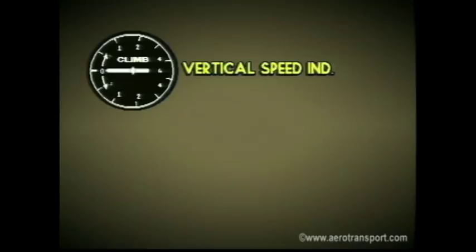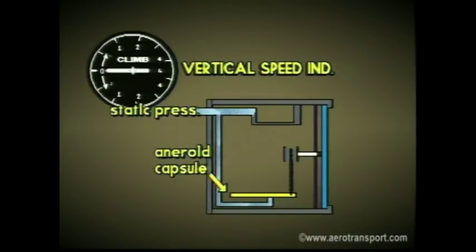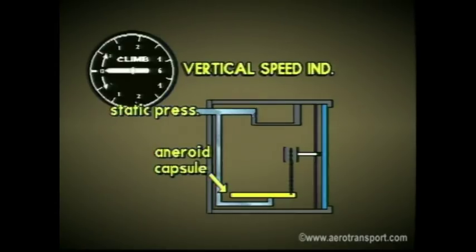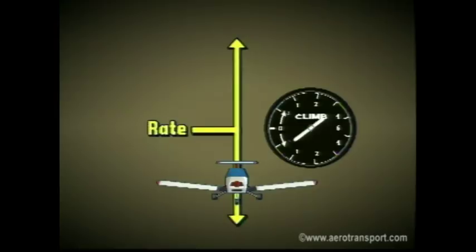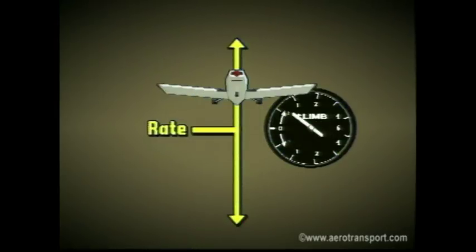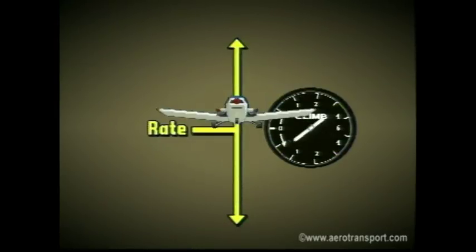The vertical speed indicator shows the rate of climb or descent. It uses an aneroid capsule connected to the static pressure line to measure change in barometric pressure. As the airplane descends, the pressure in the static line increases. The opposite is true for a gain in altitude. During level flight, the pointer remains at zero. The instrument is calibrated in feet per minute. Keep in mind, the vertical speed indicator measures the rate of climb or descent, not the altitude of the plane.